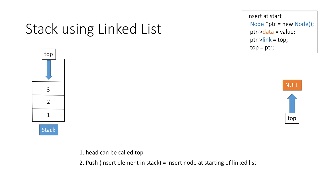Let's insert the first element in our stack, that is the element 1. We create a new node — let's say it is at address 100 in memory — which is stored in our pointer ptr, which means ptr is now pointing to this node. Next we will insert the value 1 in the data part of the node.